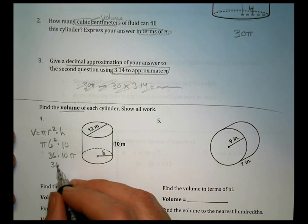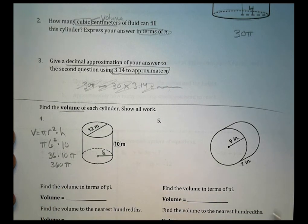36 times 10 is 360, and we keep pi like it is, because the first part says we'll find the volume in terms of pi, so we would say 360 pi.